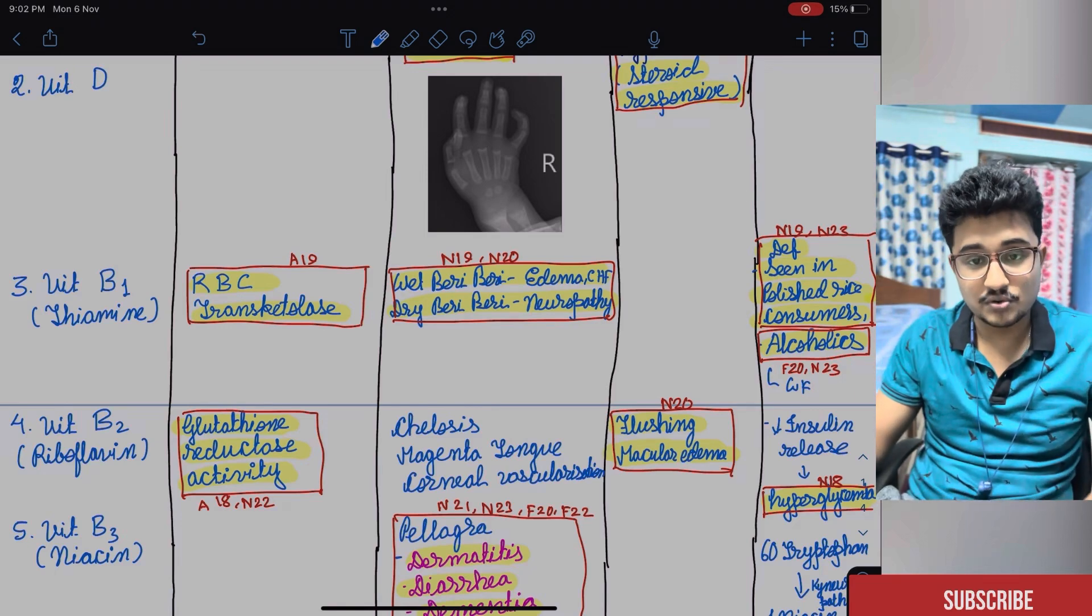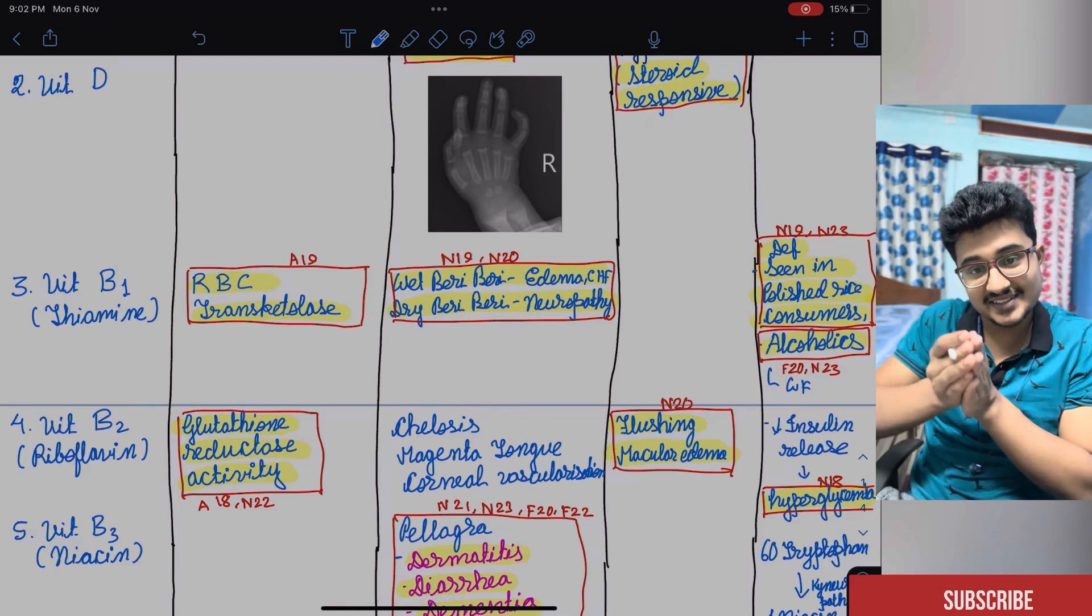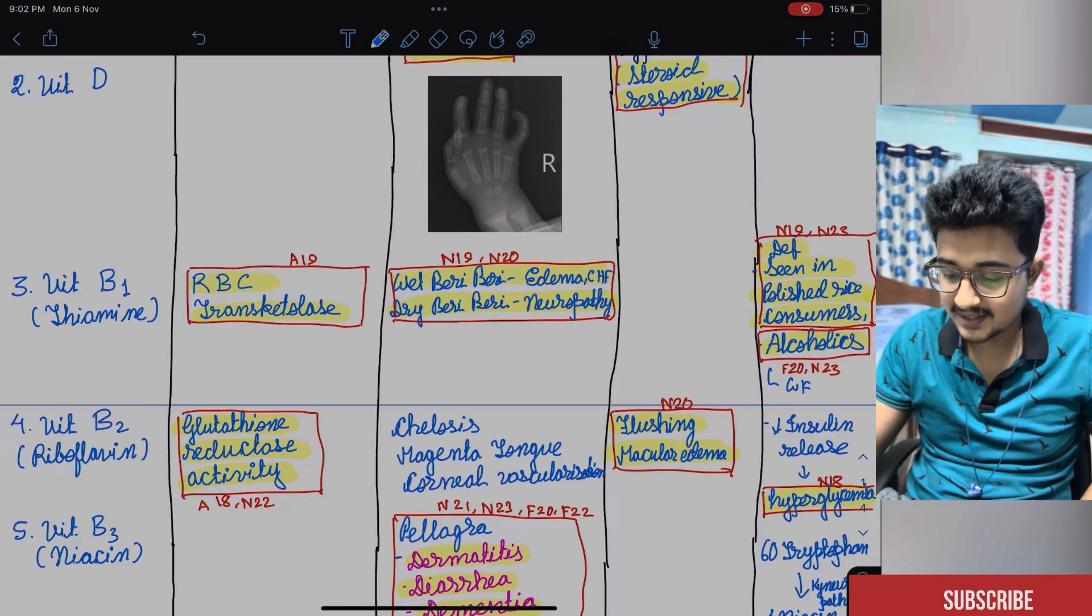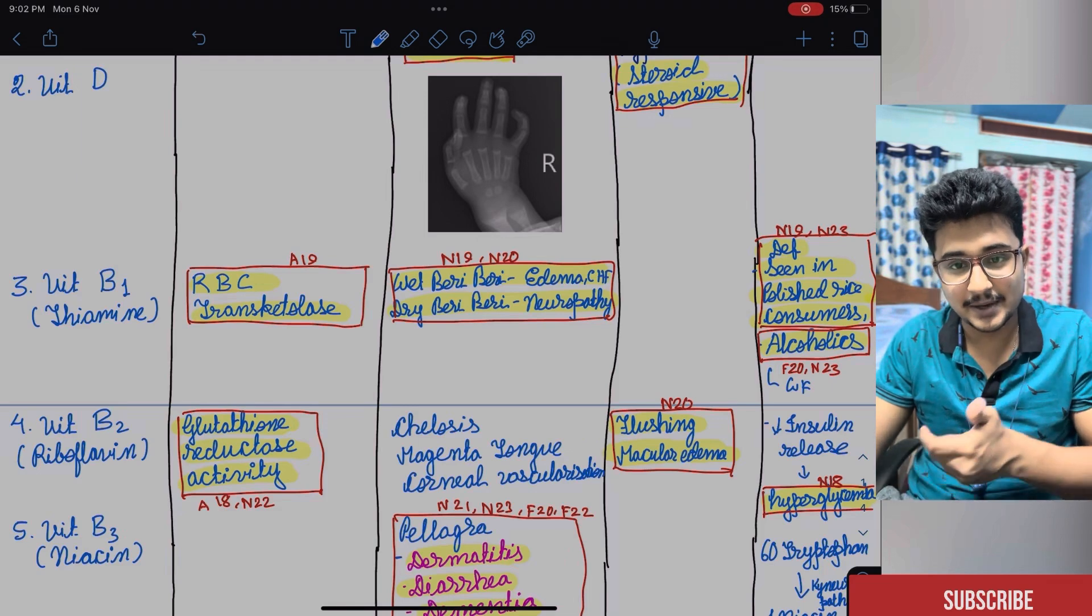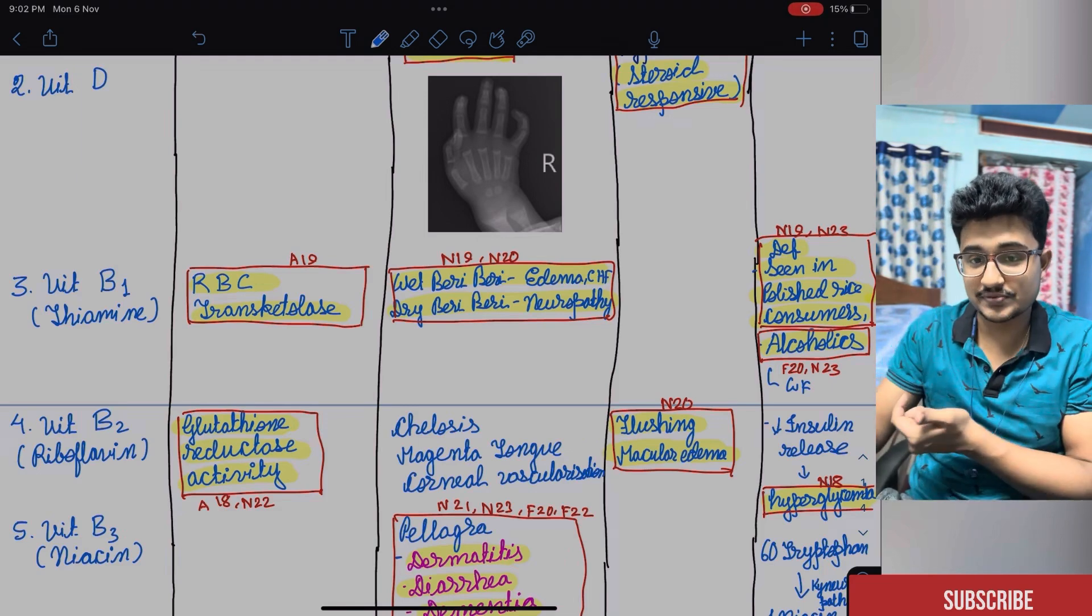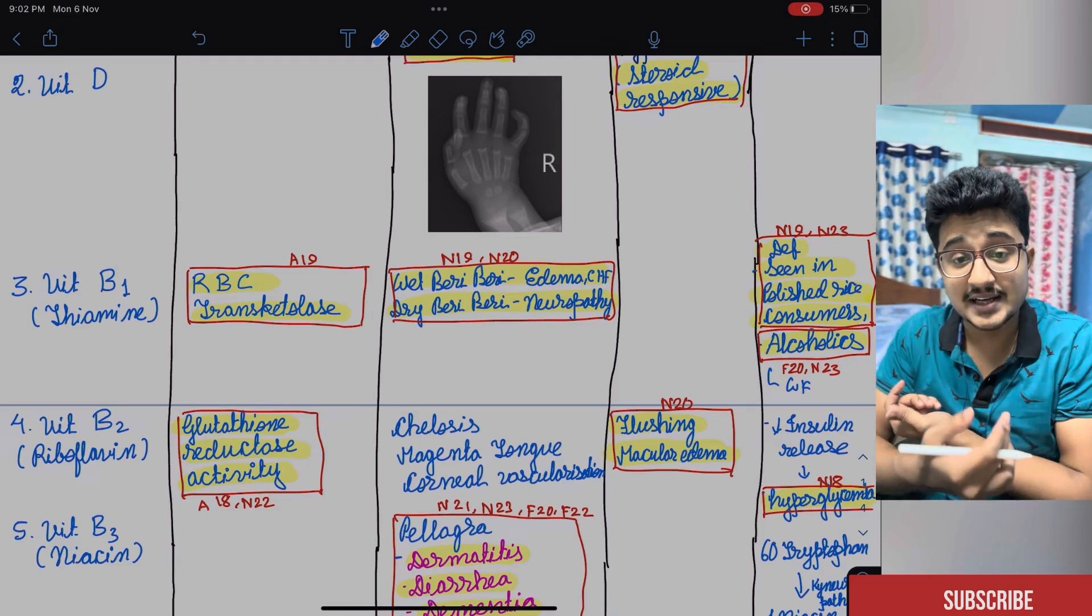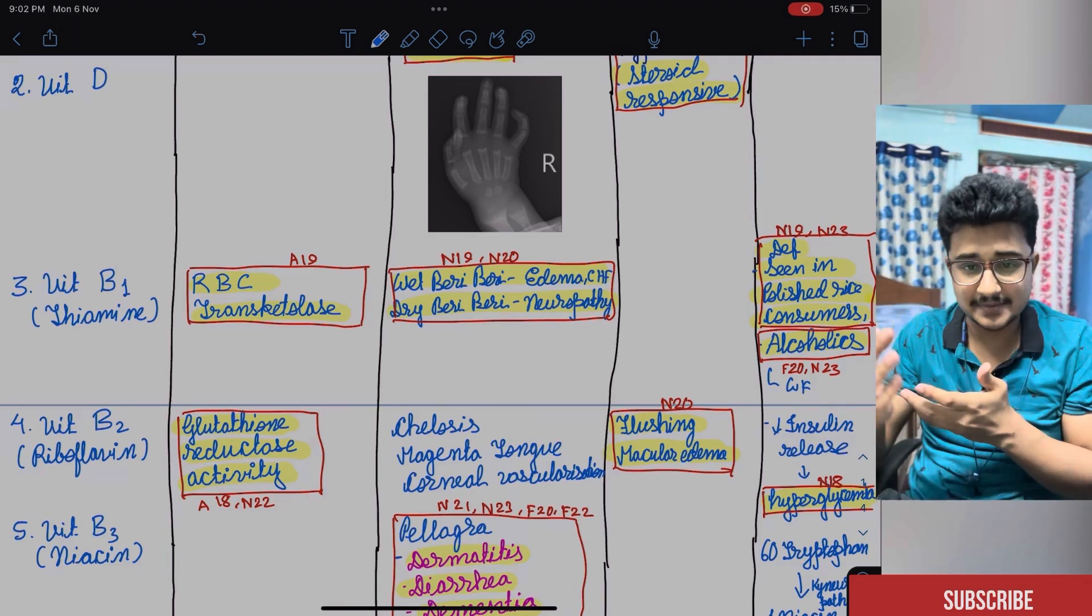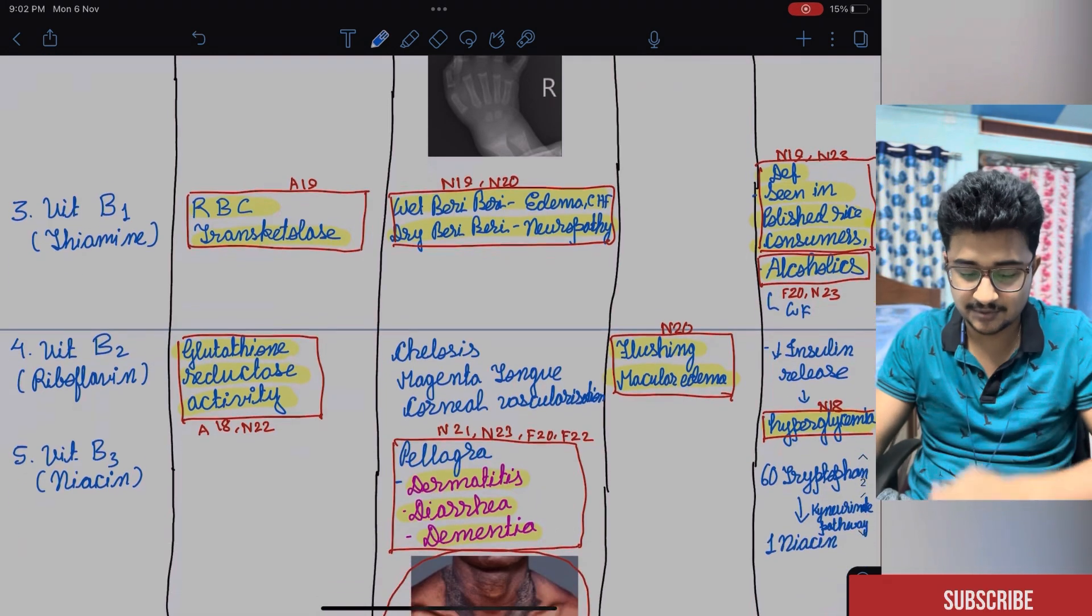And it is also seen in alcoholics like Wernicke's Korsakoff psychosis. First thiamine is given, after that dextrose is given in an alcoholic patient. Because as you know that thiamine is necessary for the pyruvate dehydrogenase. If you give glucose first, then lactate would accumulate. And it would accumulate in the brain. And it can cause more encephalopathy, more metabolic encephalopathy.